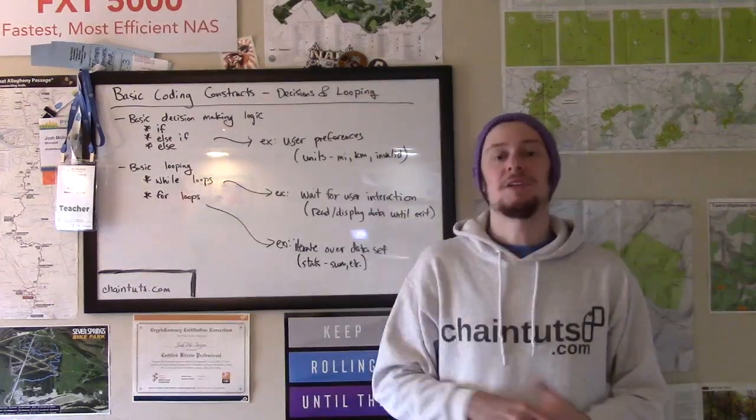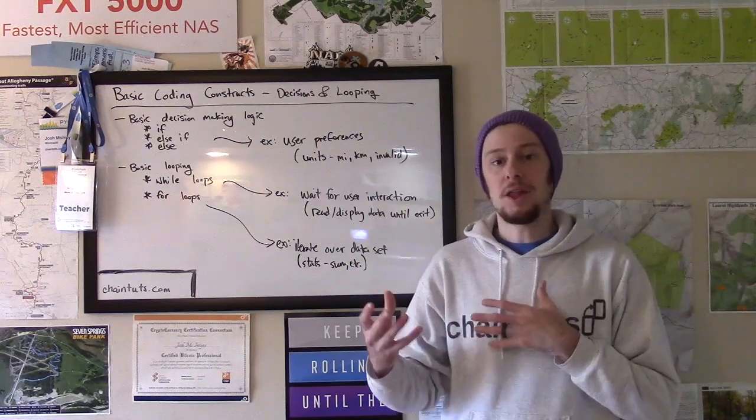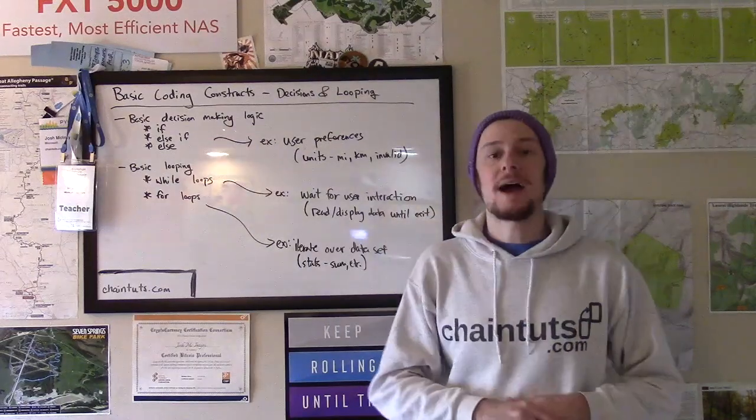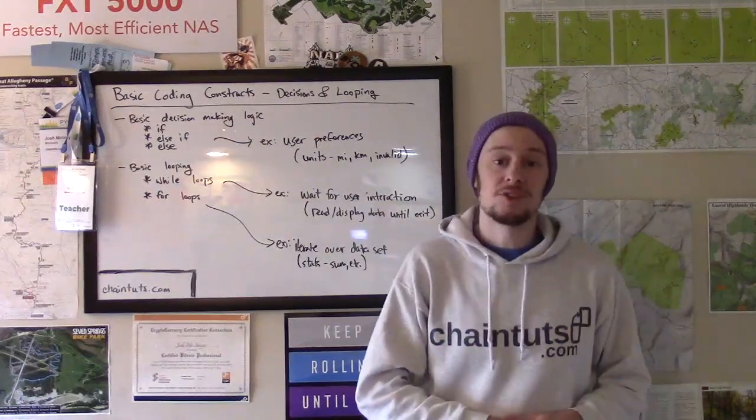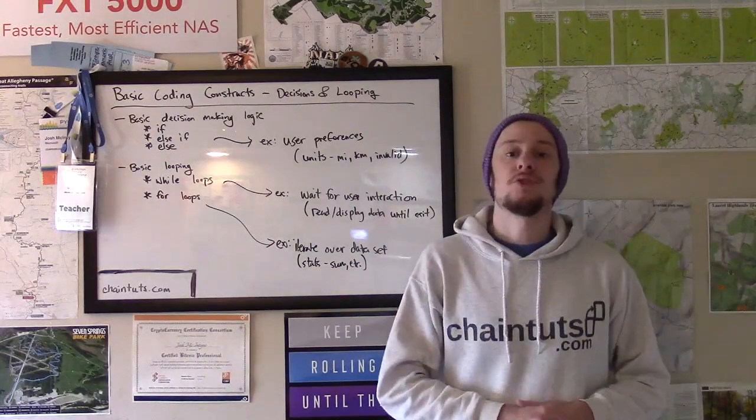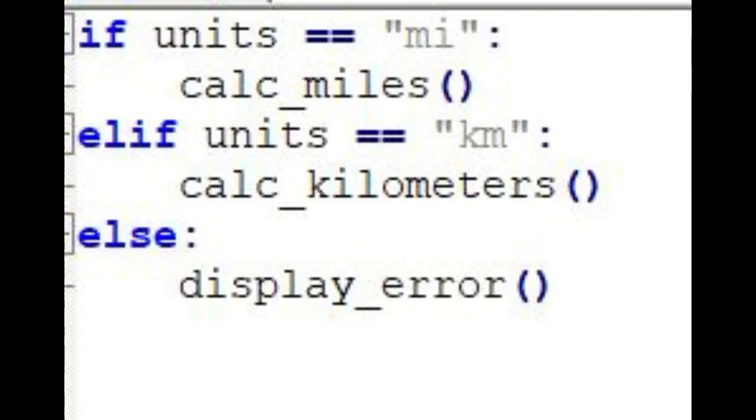You would use an if statement to display the distance or calculate the distance in miles if the user chooses miles in some dialogue. So for example, you would say if the dialogue is ticked for miles, we're going to execute the calculate miles function. Or if the user chooses kilometers, we're going to execute the calculate kilometers function.